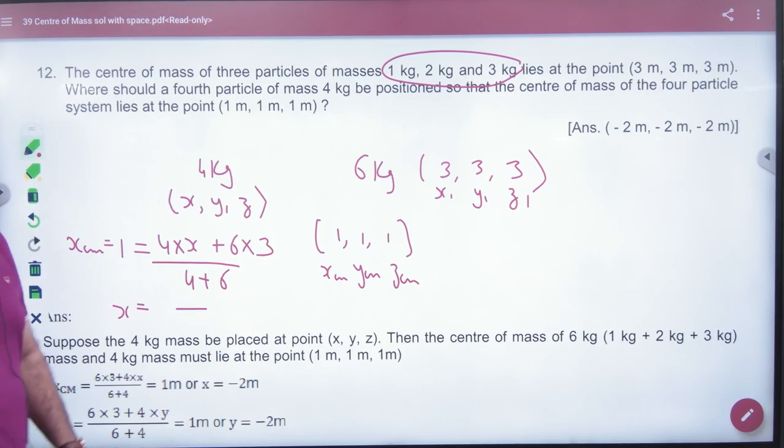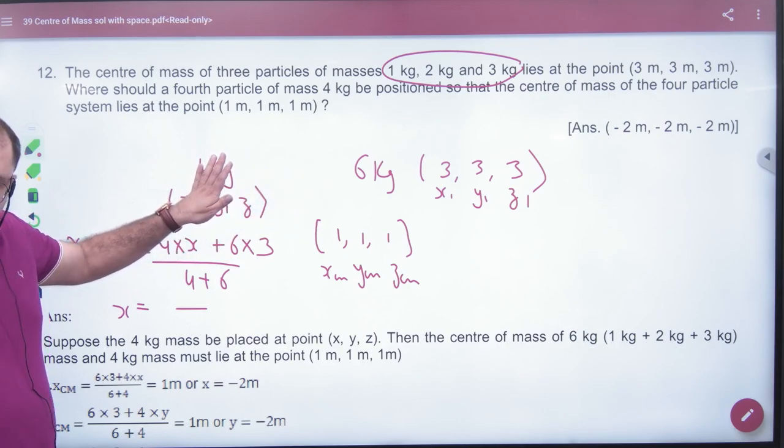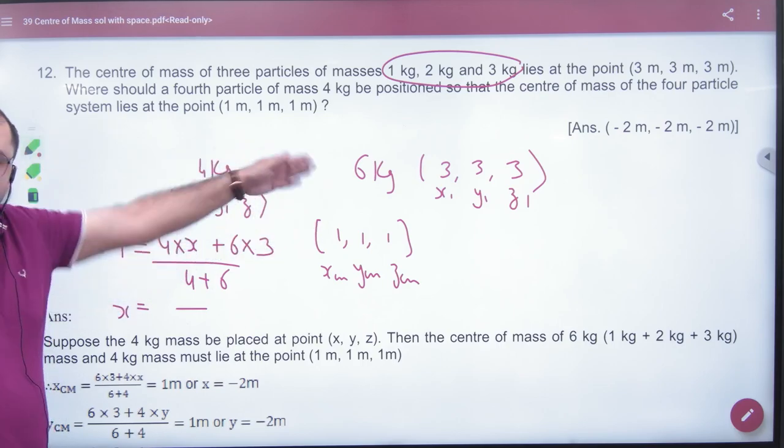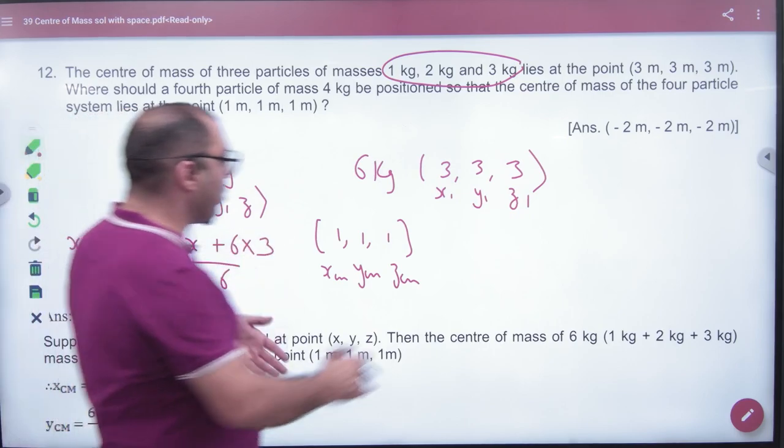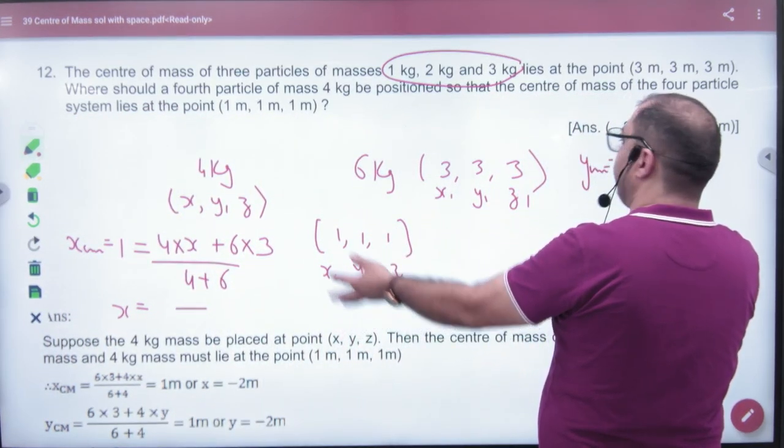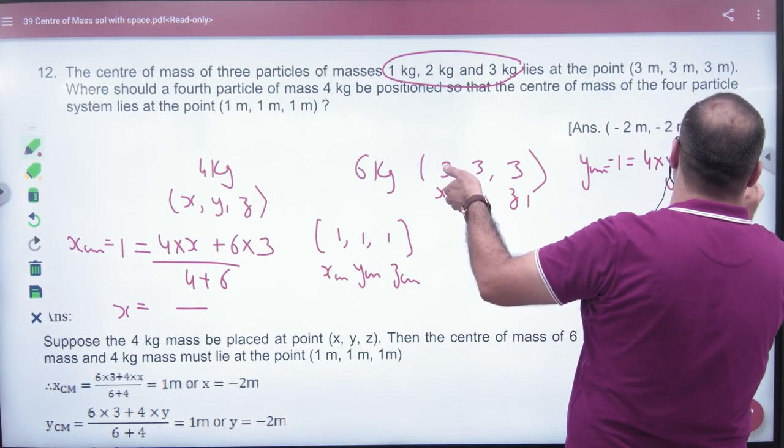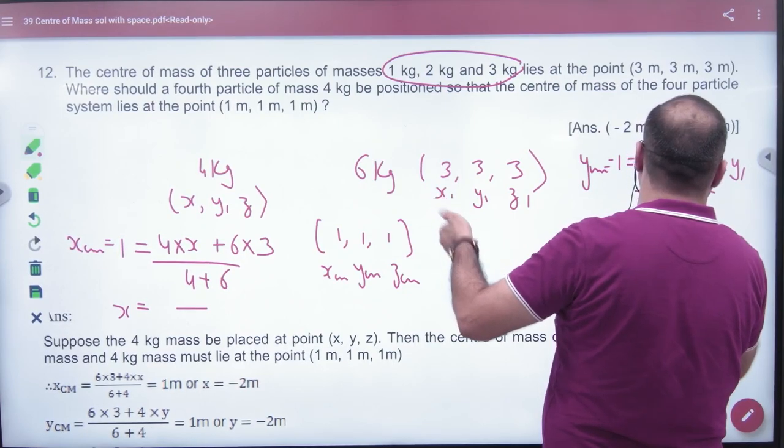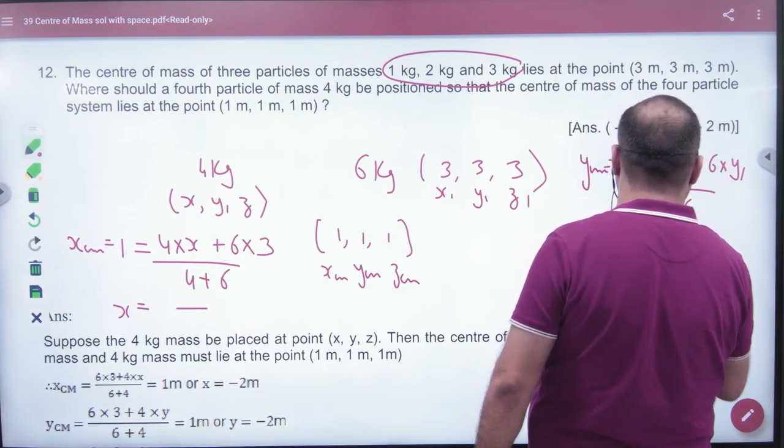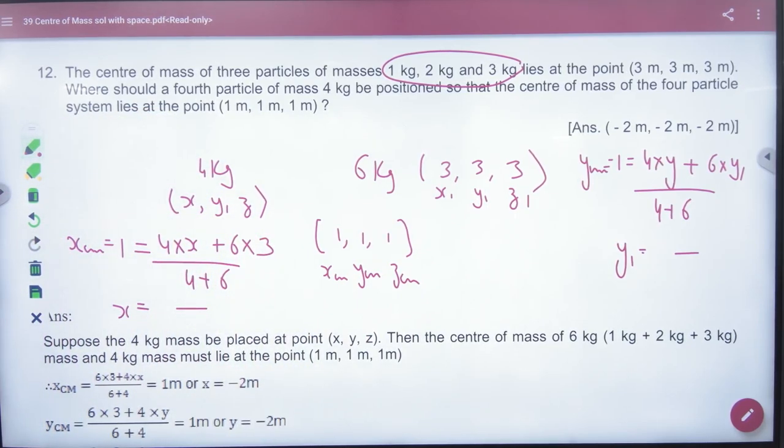So, we have taken one body. It's 6 kg. The coordinate is given. Y, Y, Y, Y. Which will be equal to 4 into Y plus 6 into Y1 divided by 4 plus 6. Solve and you have Y1. And what will be Z? 1. Good question. This is the question. Thank you.